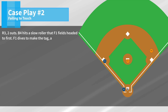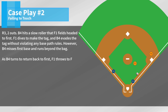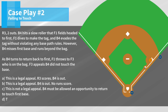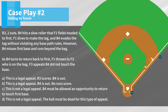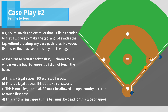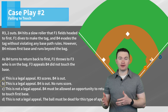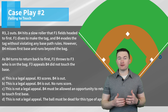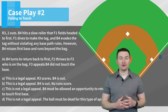Case play two: R3, two outs. B4 hits a slow roller that F1 fields heading to first. F1 dives to make the tag and B4 evades without violating any base path rules. However, B4 missed first base and runs beyond the bag. As B4 turns to return, F1 throws to F3 who is on the bag, and F3 appeals that B4 did not touch the base. The correct answer is B — this is a legal appeal, B4 is out, and no runs score. This out, the third out of the inning, is made on the batter before touching first base. Anytime that's the scenario, no runs are going to score.